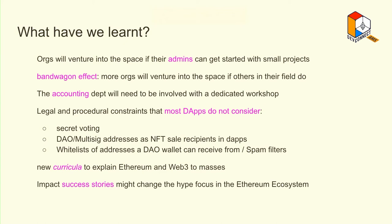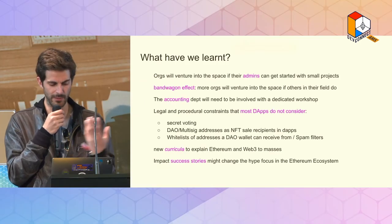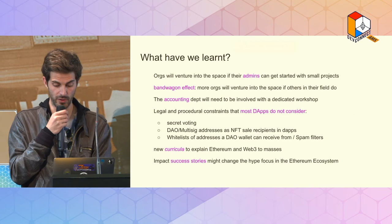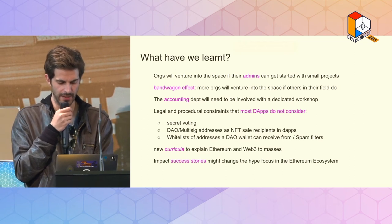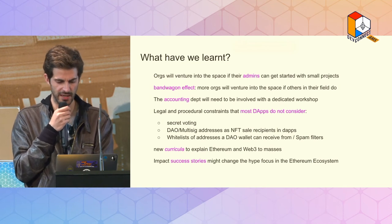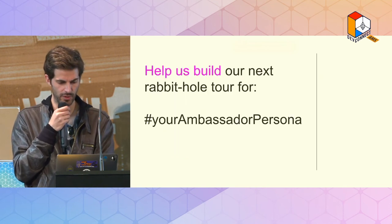DAO multi-signature addresses that can mint NFTs, and green lists - let's not use white lists anymore - of addresses a DAO wallet can receive from, so spam filters. This gives us a heap of feedback we can use as curricula for new workshops that can be made in a modularized way, so we can more easily reach success stories with these players.